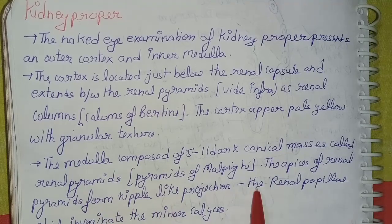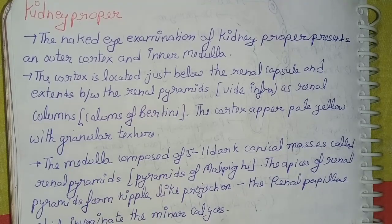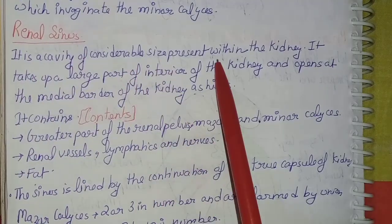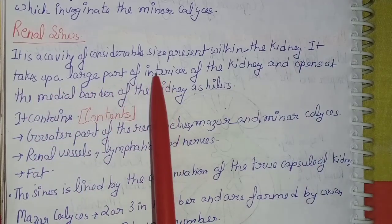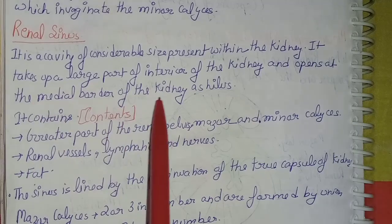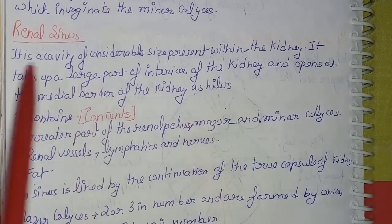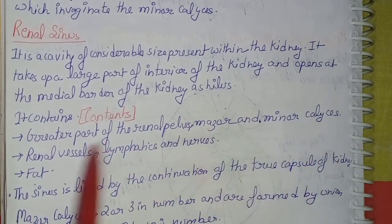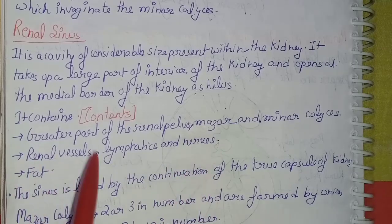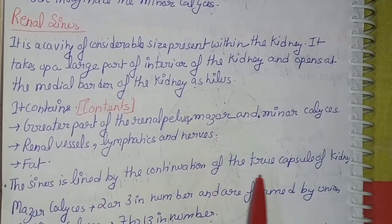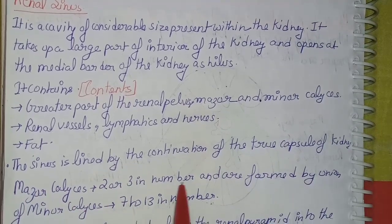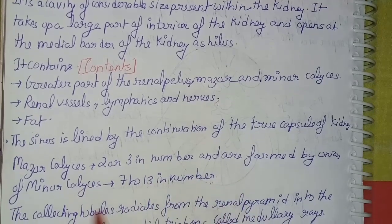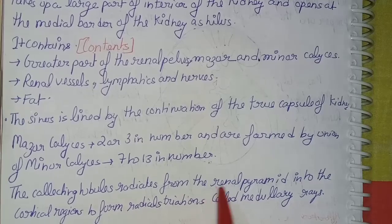The medulla is composed of 5 to 11 dark conical masses called renal pyramids (pyramids of Malpighi). The apices of the renal pyramids form nipple-like projections called the renal papillae, which invaginate the minor calyces. The renal sinus is a cavity of considerable size present within the kidney. It opens at the medial border of the kidney as the hilum. Its contents include the greater part of the renal pelvis, major and minor calyces, renal vessels, lymphatics, nerves, and fat.